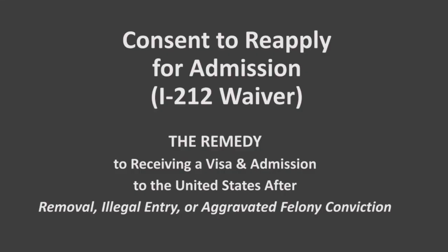If you've been removed from the United States, you are barred from reentry for 5, 10, or 20 years or permanently. The length of the ban depends on the circumstances. In some cases, you have a permanent bar if you illegally reenter the US or try to do so. An aggravated felony conviction also bars you for a lifetime.